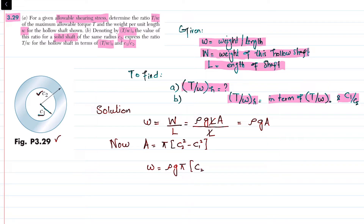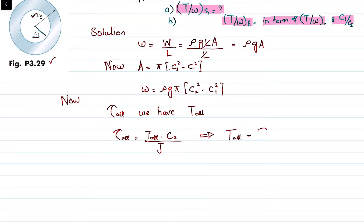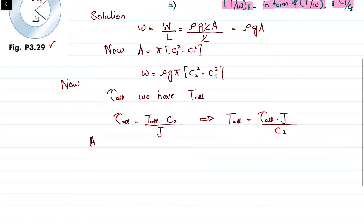For a given allowable shearing stress, the maximum allowable torque T_allow satisfies τ_allow = T_allow·c / J, where c equals c2, the outer radius. Rearranging gives T_allow = τ_allow·J / c2. The polar moment of inertia J for this hollow shaft is J = (π/2)·(c2⁴ - c1⁴).